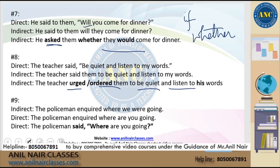The last one: 'The policeman inquired where we were going' is in indirect form, so you cannot use 'inquired' again when converting to direct. It needs inverted commas, so it becomes: 'The policeman said, Where are you going?' This concludes the topic of direct and indirect speech.